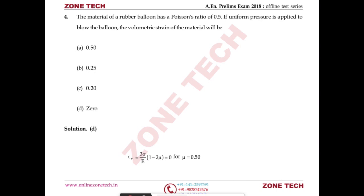For uniform pressure, volumetric strain = 3σ/E × (1 − 2μ). Here μ = 0.5, so (1 − 2×0.5) = 0, making volumetric strain zero. This means when Poisson's ratio is 0.5 under uniform pressure, the change in volume is always zero. Answer: D.